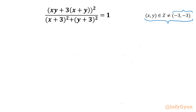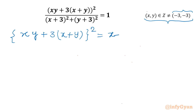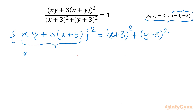The denominator cannot be 0, so we can cross multiply. Our equation becomes: xy plus 3 times (x plus y) whole square equal to (x plus 3) whole square plus (y plus 3) whole square. Now this bracket itself I can write as xy plus 3x plus 3y.